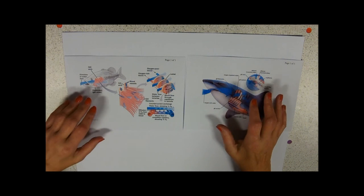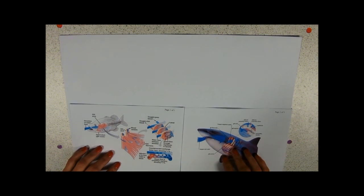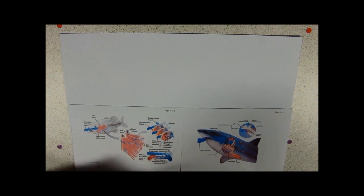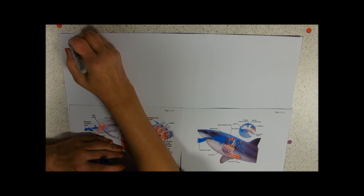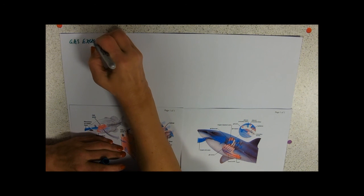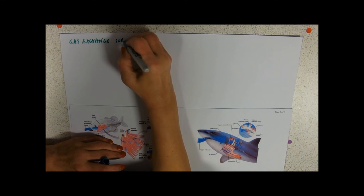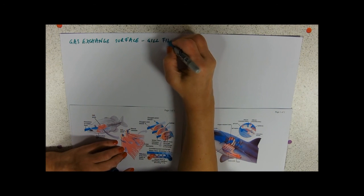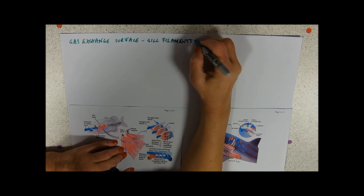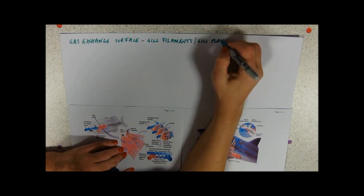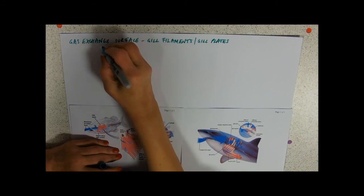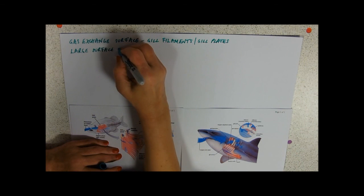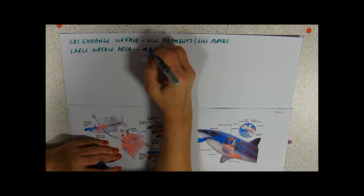So, when we're looking at how we're fulfilling these, you can ignore the rest of the diagrams for now. Let's just look at how they're fulfilling those structural requirements. So, we're looking at the gas exchange surface being the gill filaments. Now, some places you might read also that's the gill plates, and we'll talk about gill plates in a minute. So, we have a large surface area because we've got many of them.